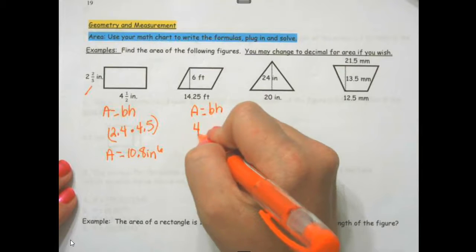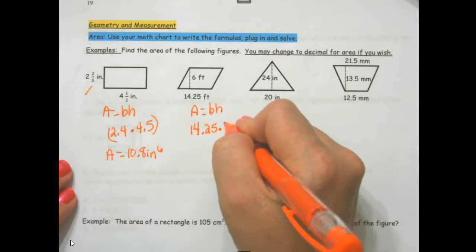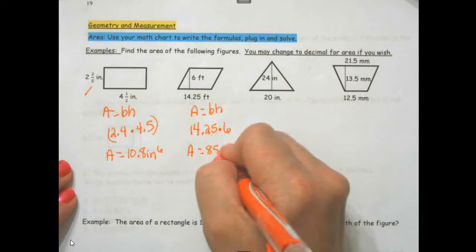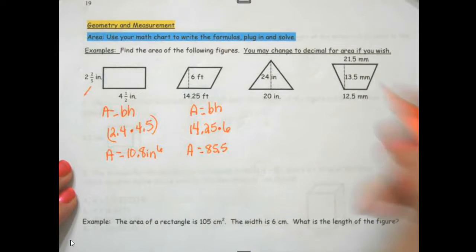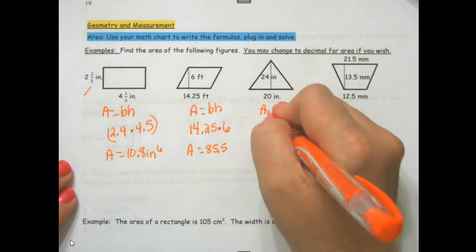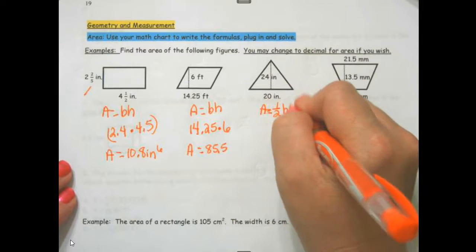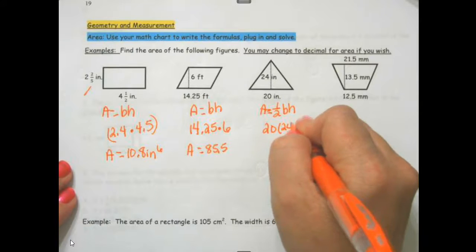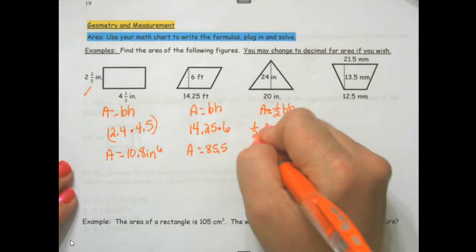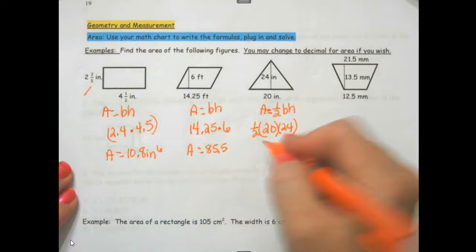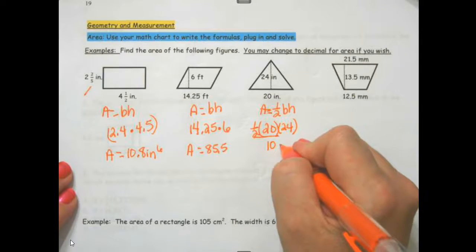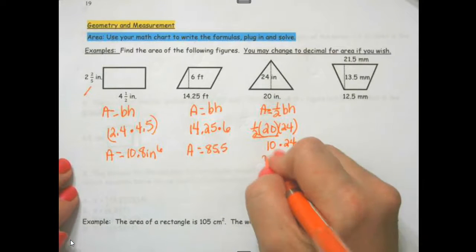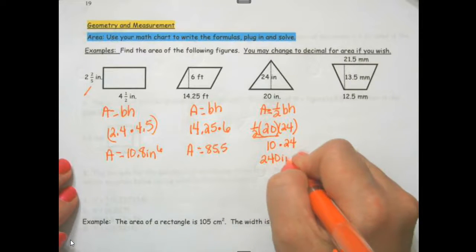Area equals half base times height, 20 times 24, half of that. You can do half of 10, 10 times 20, or half of 20 which is 10, 10 times 24 is 240 inches squared.